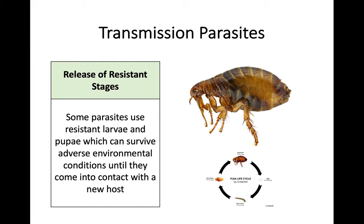In terms of resistant stages, this almost mirrors dormancy, where some parasites can lay or grow larvae which are able to survive adverse conditions. For example, in an old carpet where there's been fleas, you could have larvae living in there for a period of time where there's no host — just waiting for a host to come in. If a dog then comes in, they can latch onto that host. This resistance stage means there's a delay in transmission before they come into contact with the new host.